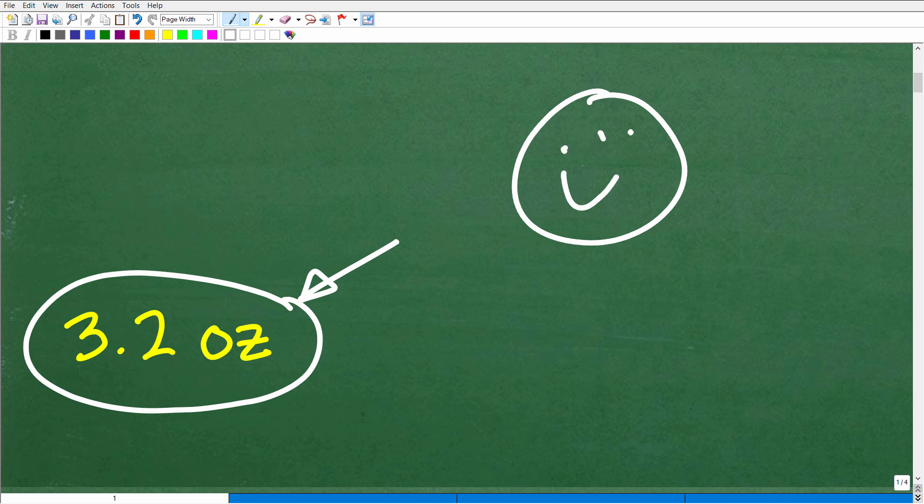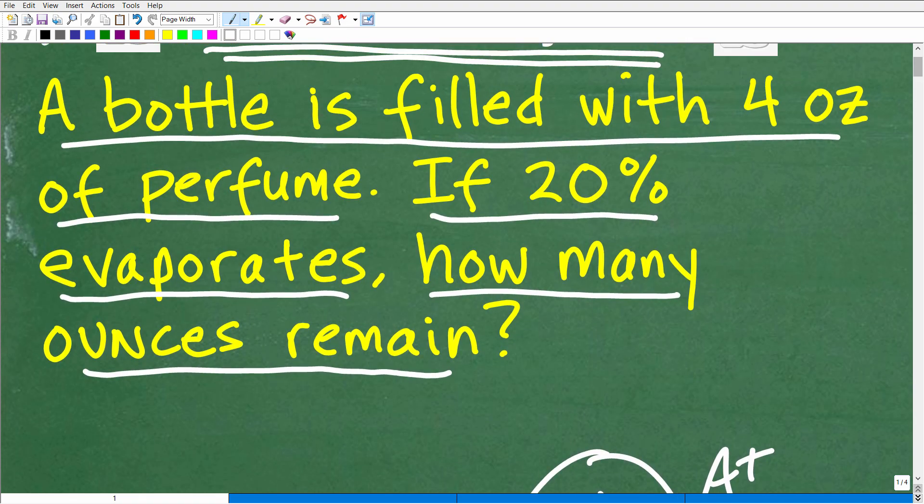But for those of you who did get the right answer, let's go ahead and celebrate by giving you a nice little happy face, an A plus, a 100%, and a few stars so you can tell your friends and family that you know exactly how to solve. What type of problem are we dealing with here? Well, I would say a percent problem.